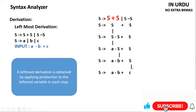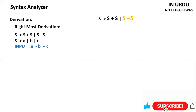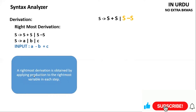Now we have leftmost derivation; let's move to the rightmost derivation. We will talk about the rightmost derivation with the same input. Rightmost derivation is obtained by applying production to the rightmost variable in each step. So we will take the rightmost variable. The rightmost is S minus S, so we will expand this.